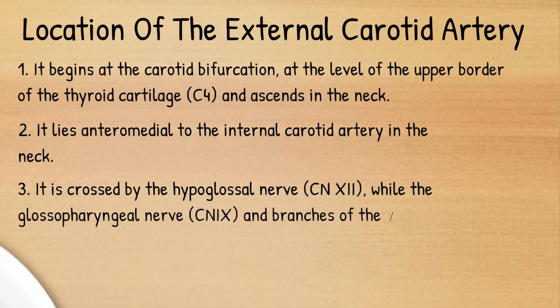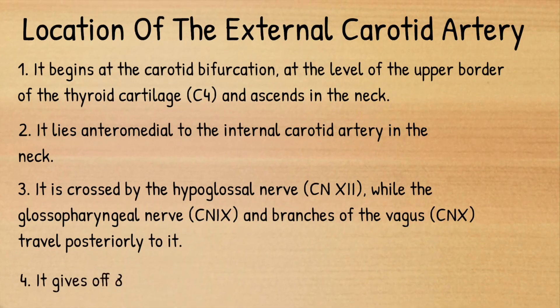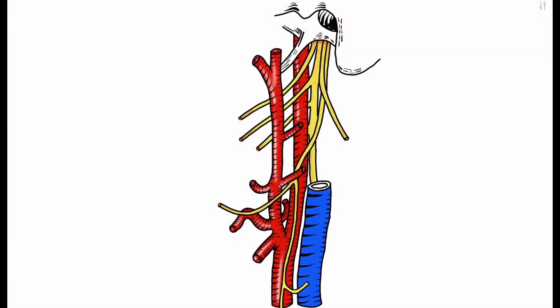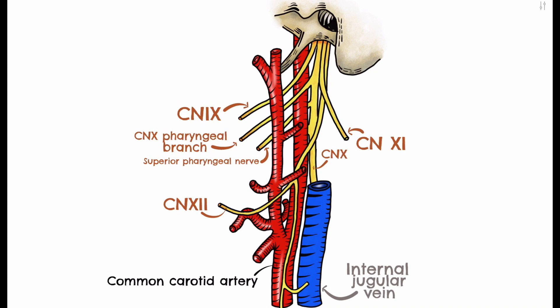Travelling posteriorly to the external carotid is the glossopharyngeal nerve, cranial nerve 9, and branches of the vagus, cranial nerve 10. The external carotid gives off eight main branches. Here we can see the bifurcation of the common carotid and structures relating to the external carotid, including the internal jugular vein with some cranial nerves — notably the glossopharyngeal nerve, the hypoglossal nerve, the vagus and some of its branches, as well as the accessory nerve.